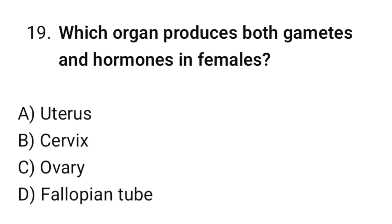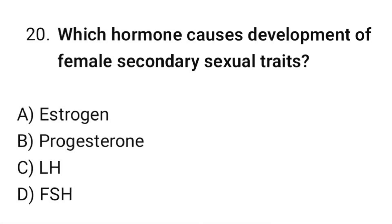Question No. 19: Which organ produces both gametes and hormones in females? The correct option is C. Ovary. Question No. 20: Which hormone causes development of female secondary sexual traits? The correct option is A. Estrogen.